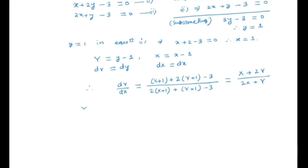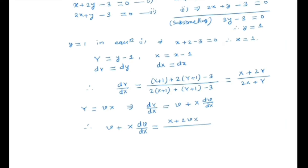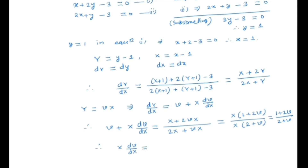Now we put Y = vX. Taking the derivative, dY/dX = v + X dv/dX. Substituting, we get v + X dv/dX = (X + 2vX)/(2X + vX) = X(1 + 2v) / X(2 + v) = (1 + 2v)/(2 + v).